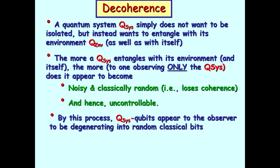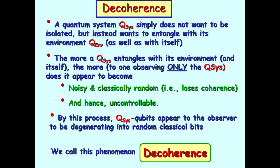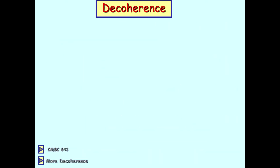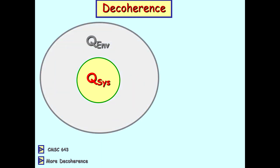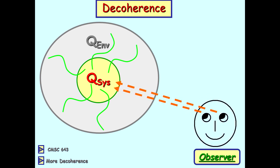The more a quantum system entangles with the environment and itself, the more to one observing only the system without looking at the rest of the world, it will appear to be noisy and classical. It's actually an entangled pure state, but since we're only looking at part of it, it appears to be noisy and classical. It's said to lose its coherence. And hence, it's uncontrollable. By this process, qubits appear to the observer to be degenerating into random classical bits. But in actuality, quantum mechanics says that they are part of a pure state. We're only observing part of the pure state, part of an entangled state. We call this phenomena decoherence. And so we have a quantum system, and it lives in a quantum environment. And we try to isolate it, but it's very hard. It starts to entangle by random unitary transformations that are totally out of our control. And if we observe the system, we see something that's actually classical.